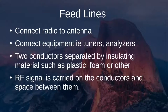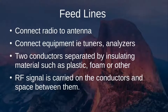Feed lines are essentially the cable that connect your radio to your antenna. The cable can also connect equipment such as antenna tuners or analyzers to your radio. Feed lines are composed of two conductors separated by insulating material such as plastic, foam, or other materials. The radio frequency signal is carried on the surface of the conductors and also in the space between them.